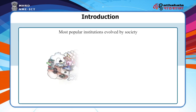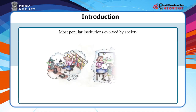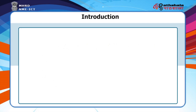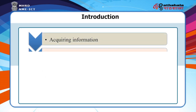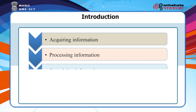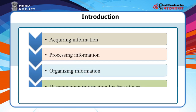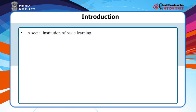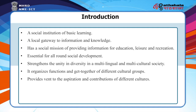Public Library and Society. Public Library is the most popular institution evolved by society. It acquires, processes, organizes and disseminates information free of cost to the society at large. It is a social institution of basic learning. It is a local gateway to information and knowledge.